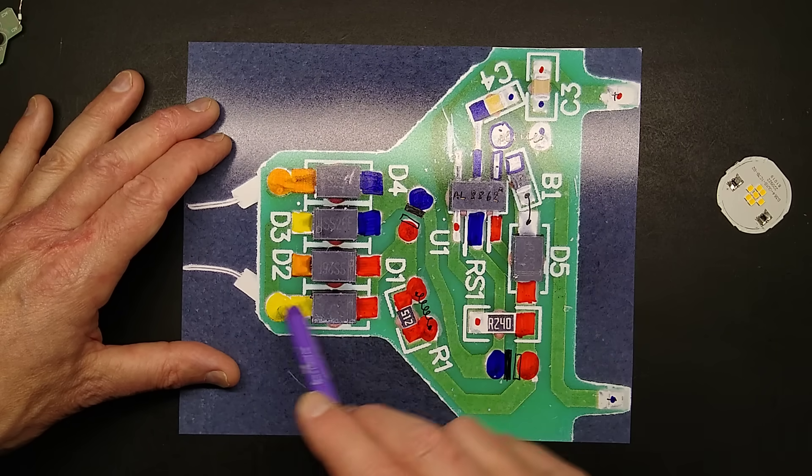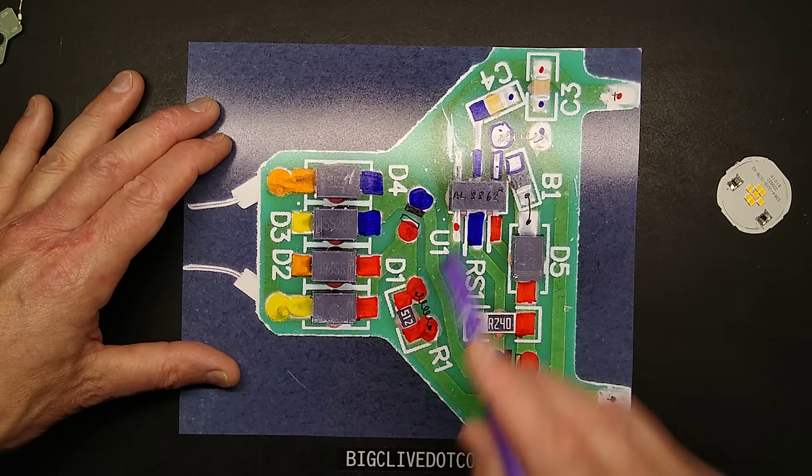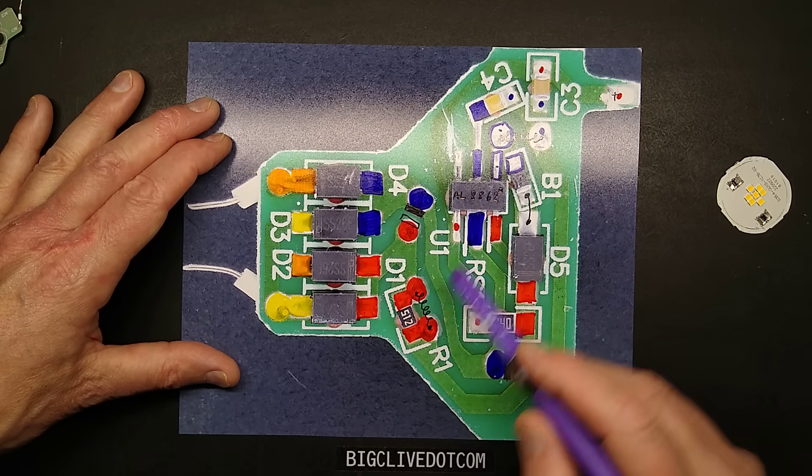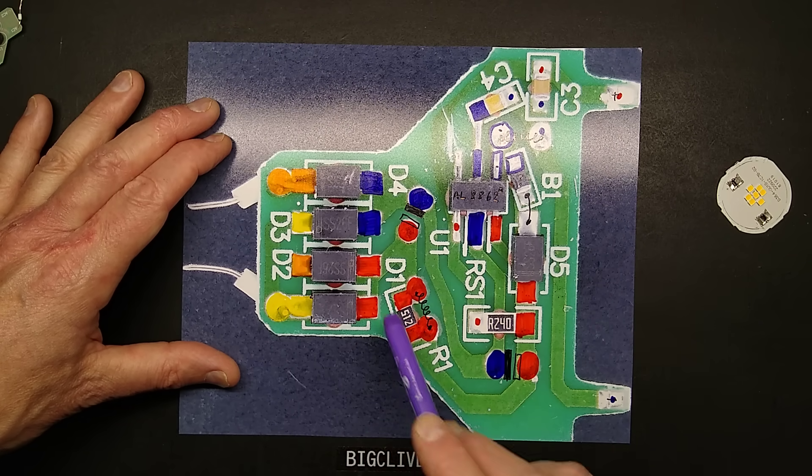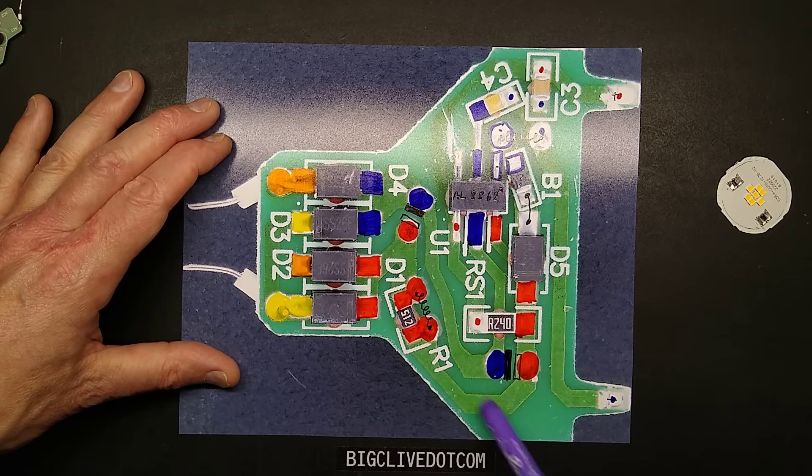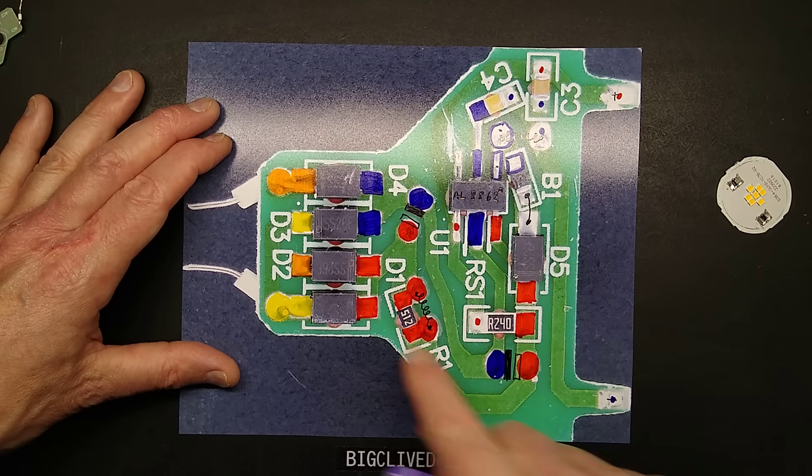So the bridge rectifier, it is based on the four discrete diodes. They go straight to capacitor. Then there's an inductor with a resistor across it, which I've not drawn in the schematic. I shall add that in a moment. And then there's another smoothing capacitor. So that's just basically providing a bit of filtering.